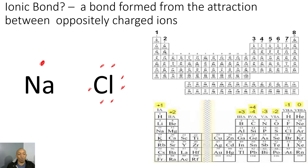It's important to note that ionic bonds are formed between metals and non-metals. So looking at this bond — is it easier for chlorine to give up seven valence electrons to sodium, or for sodium to give up its one valence electron to chlorine?